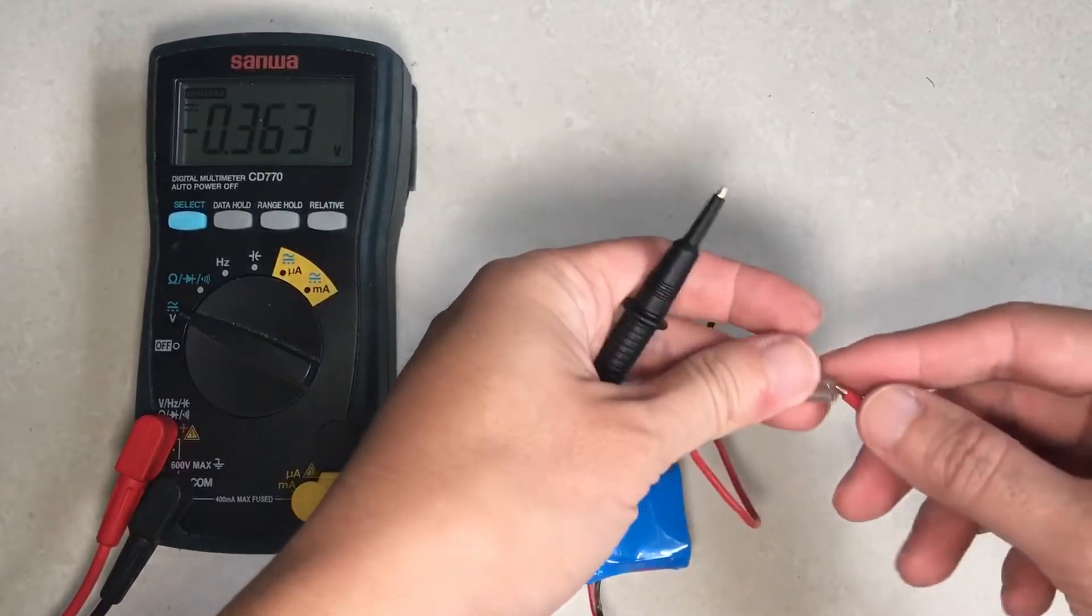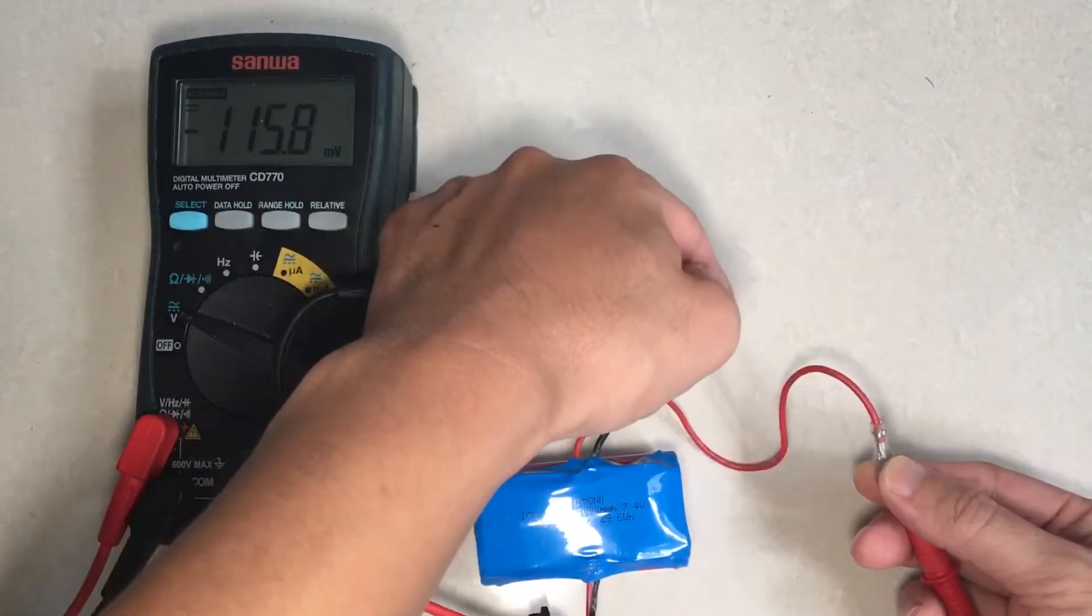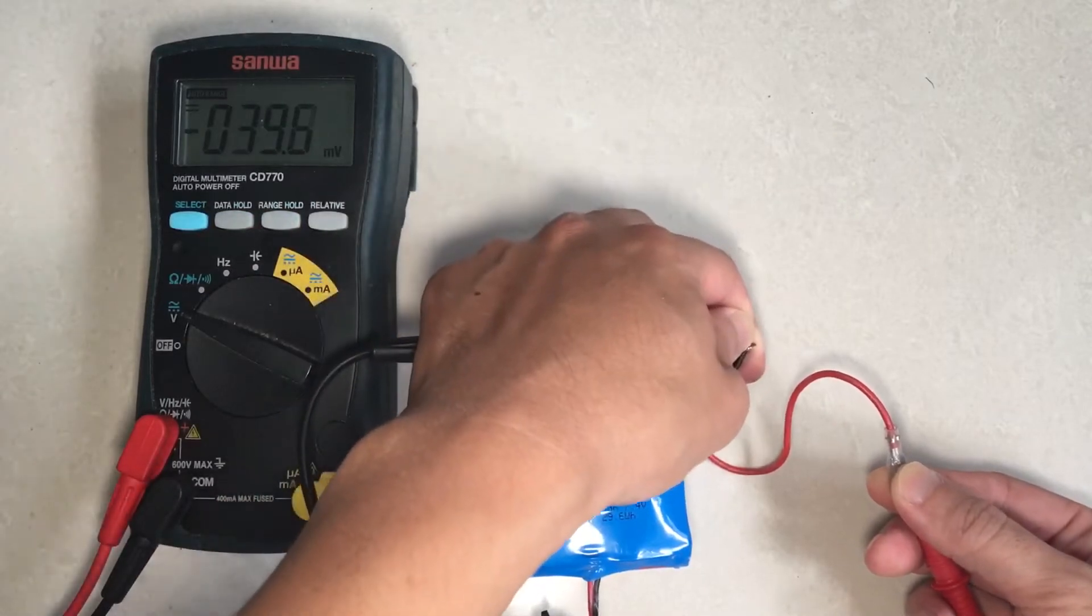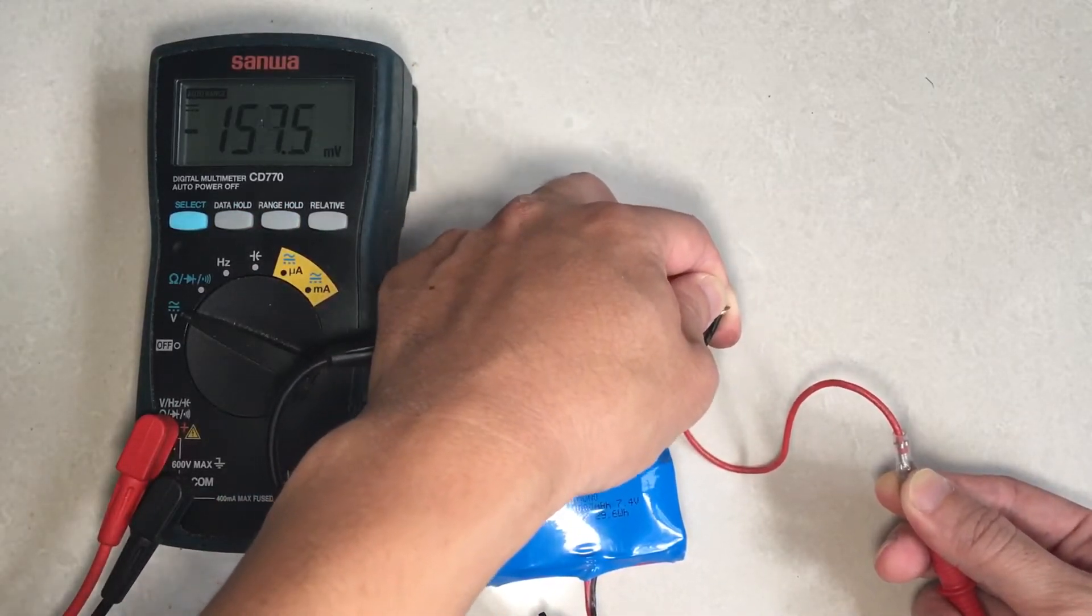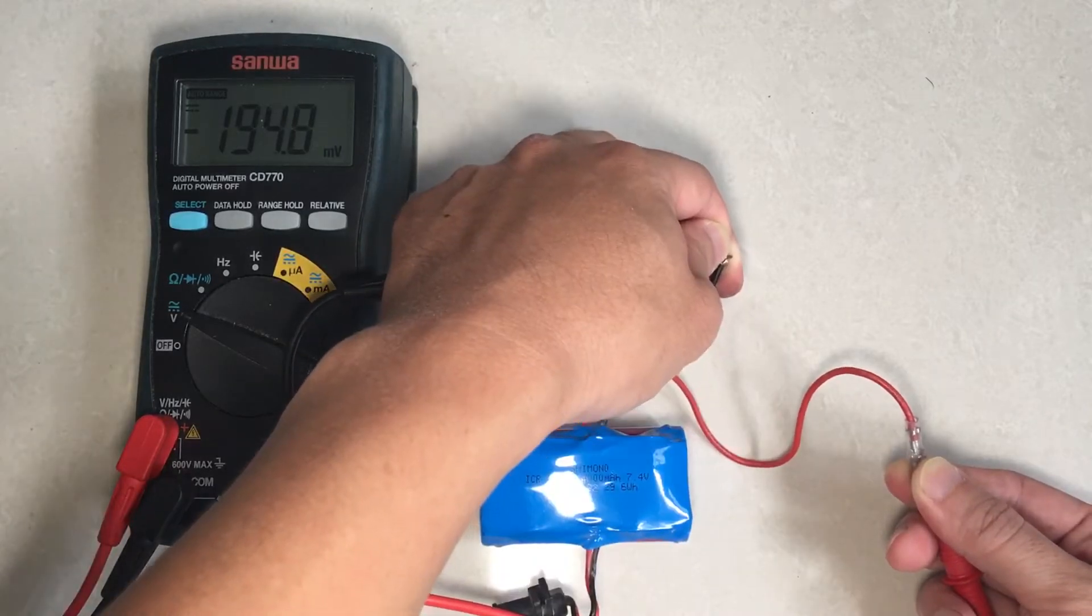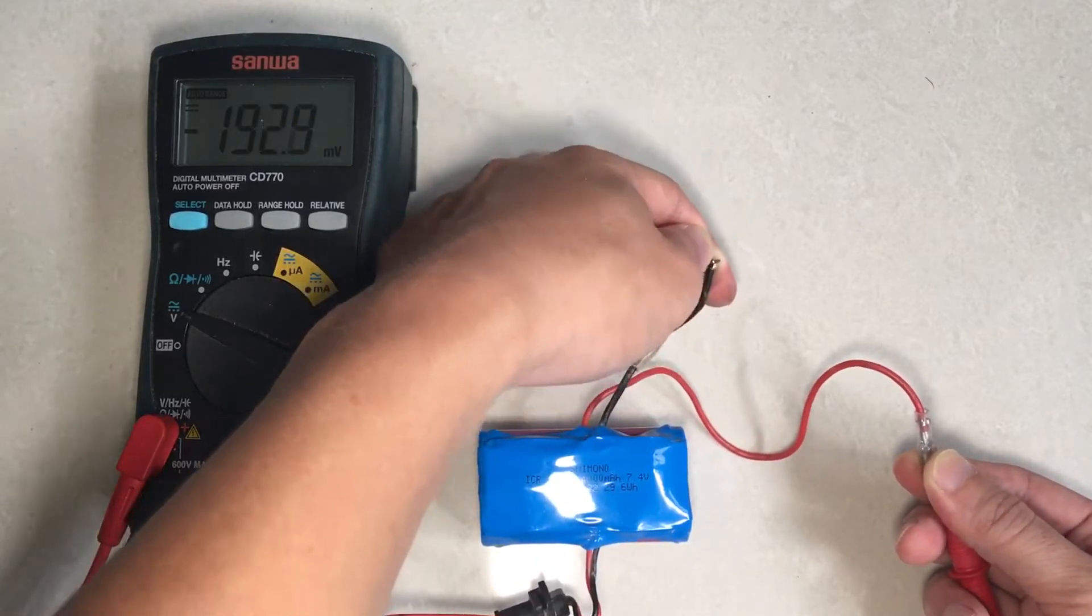Connecting it up to a multimeter, let's see what we get here. Unfortunately, looks like we don't have anything. In fact it is in negative. This could mean that the battery's protection circuit has kicked in.